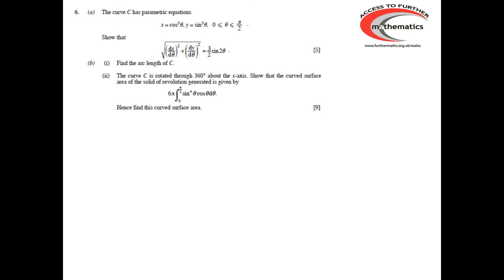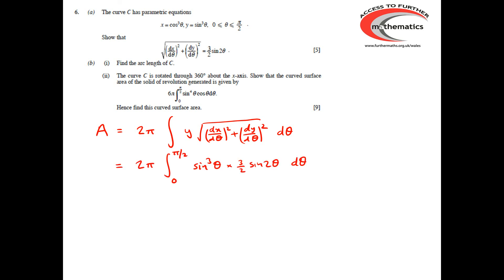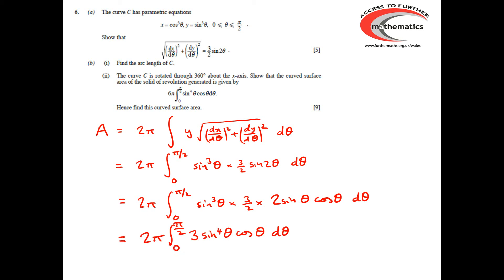Moving on to the surface area part. The surface area is the integral of 2πy times the square root of (dx/dθ)² + (dy/dθ)². That gives 2π times the integral from 0 to π/2 of sin³ θ × (3/2) sin 2θ dθ. Since sin 2θ = 2 sin θ cos θ, this becomes 2π times the integral of 3 sin⁴ θ cos θ, or 6π times the integral of sin⁴ θ cos θ.